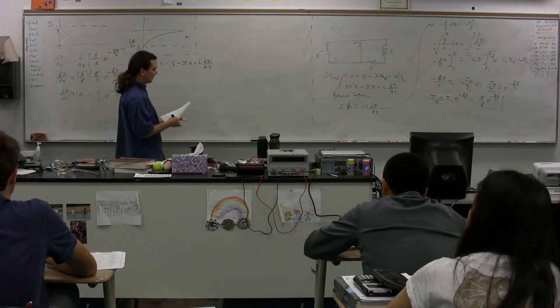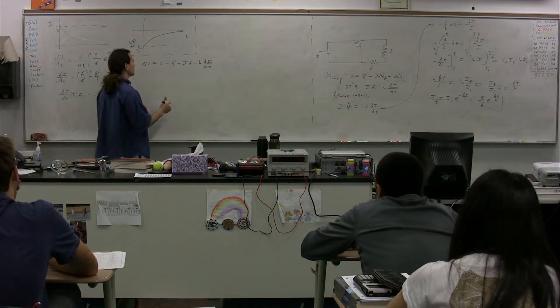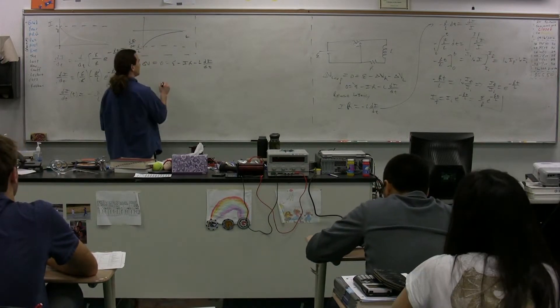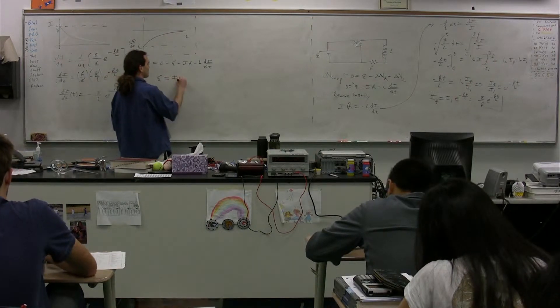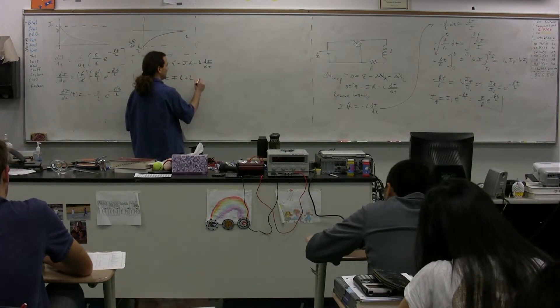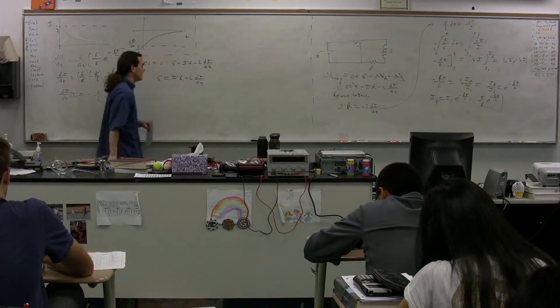If we take and we multiply this whole thing times current, we get... Actually, let me rearrange it just a little. Let's bring the emf over to one side. Emf equals current times resistance plus the inductance times the derivative of the current as a function of time.